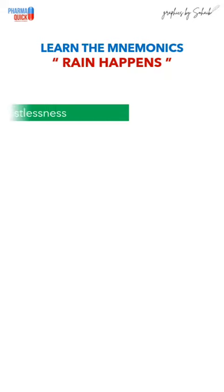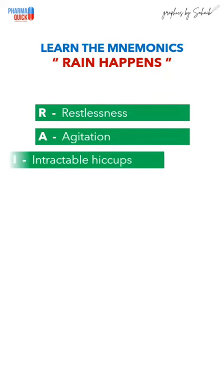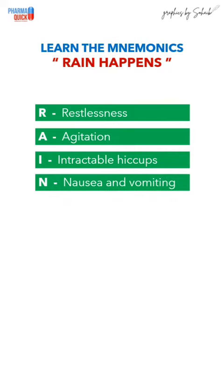R in RAIN stands for Restlessness, A for Agitation, I for Intractable hiccups, and N for Nausea and vomiting.